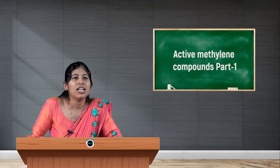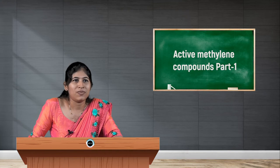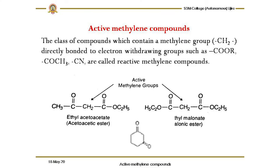For example, ethyl acetoacetate is an ester and contains an active methylene group. Another example is diethyl malonate, also an ester, which has an active methylene group directly bonded on either side to a carbonyl group. This makes the group highly acidic and electron deficient, so reagent reactions take place at this region only.